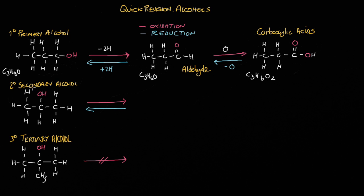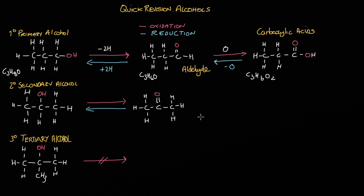Let's now move on to a secondary alcohol. Secondary alcohols can be oxidised to give ketones. On the carbon of interest we're going to lose a hydrogen, and we're also going to lose another hydrogen, ending up with a carbon double-bonded to oxygen. Here's our ketone — the carbonyl group sits in the middle.